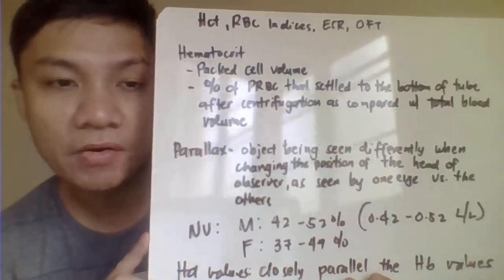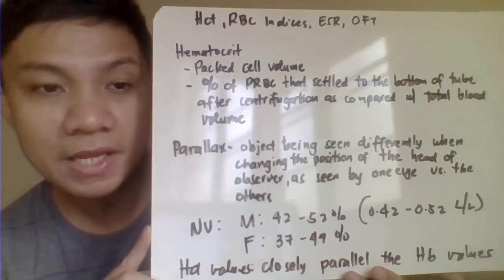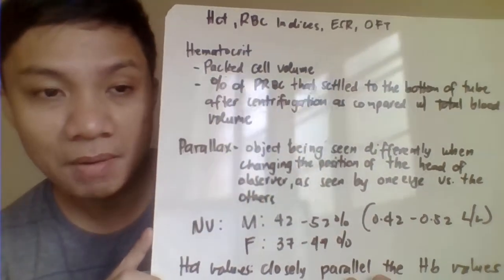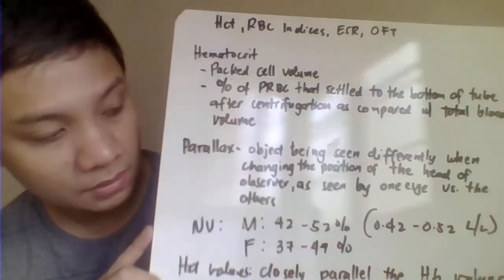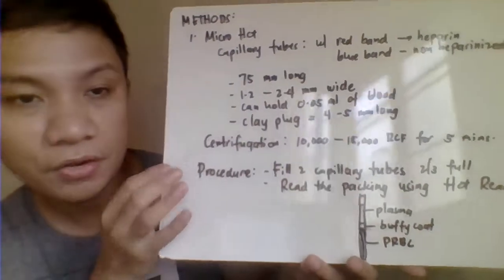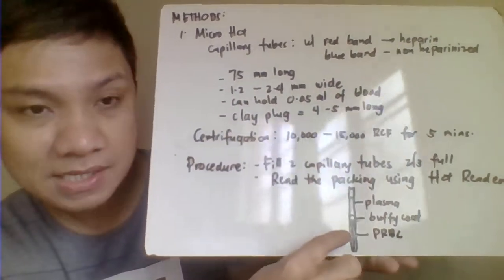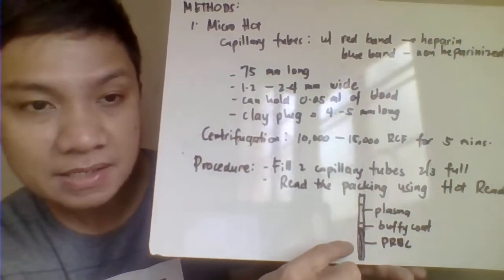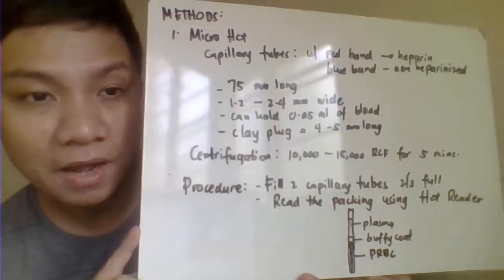First, we have hematocrit determination — also called packed red cell volume or PCV — which is primarily obtained by centrifugation of your blood. When you centrifuge blood in a capillary tube, it forms a packed RBC layer, and you obtain the percentage of that PRBC against the total volume of blood. That percentage becomes your hematocrit.